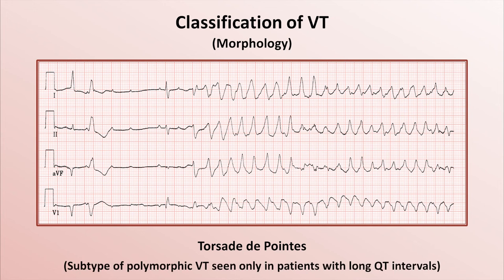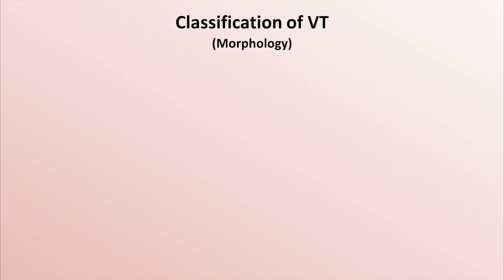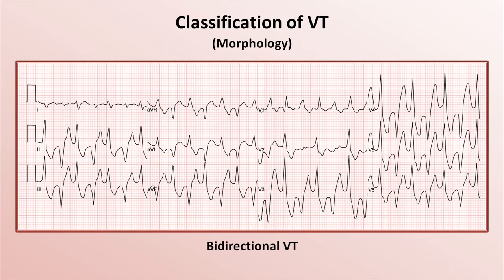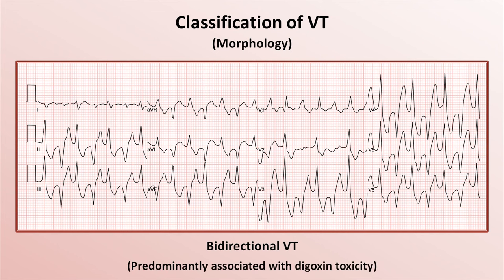Torsade is a subtype of polymorphic VT seen only in patients with long QT intervals. In torsade, the QRS complexes — more specifically the QRS axis — displays a cyclic oscillation. The second specific form is called bidirectional VT, in which there are two different QRS morphologies, but instead of moving back and forth between them after many beats as with pleomorphic VT, it alternates every other beat. This unusual and dangerous rhythm is predominantly associated with digoxin toxicity.